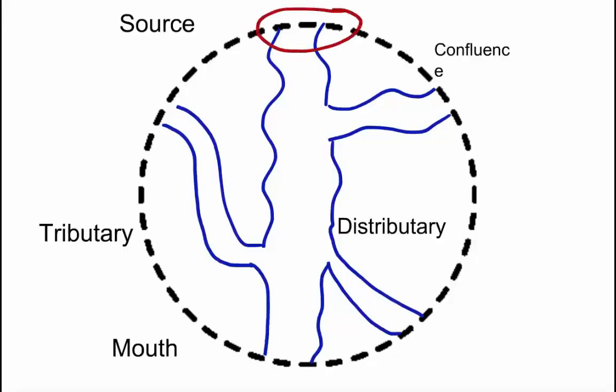Up here, at the start, where the upstream is, is called the source. And this is the origin of the river. Once we make our way downstream we're going to see that another river here crosses into our river at the moment. This is called a confluence. And it's the junction where two different rivers will meet.